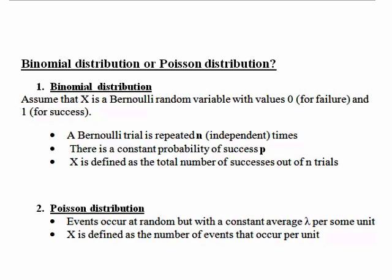First, the binomial distribution. Assume X is a Bernoulli random variable with value 0 for failure and 1 for success. A Bernoulli trial is repeated n independent times — that is, n is the number of trials. There is a constant probability of success p, and X is defined as the total number of successes out of n trials. In this scenario X is a binomial random variable, and a key word here is probability. The parameters are p, the probability of success, and n, the number of trials.